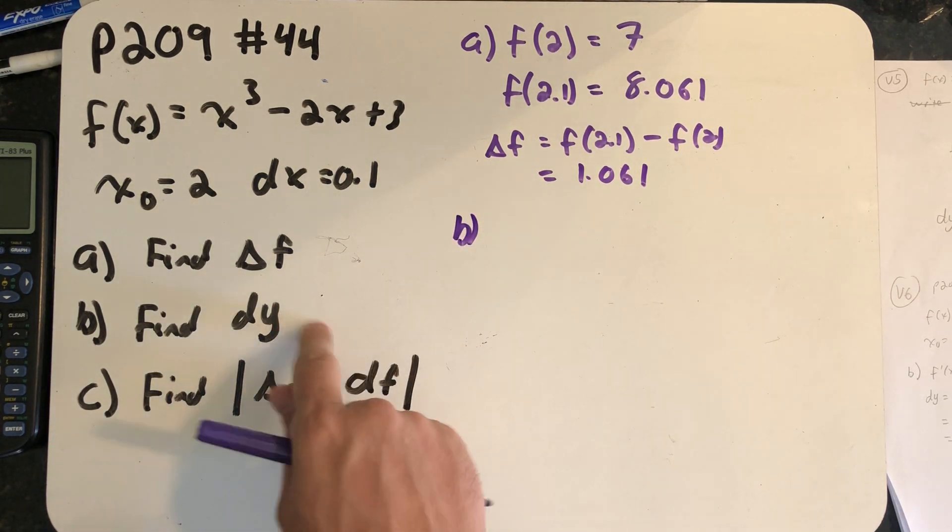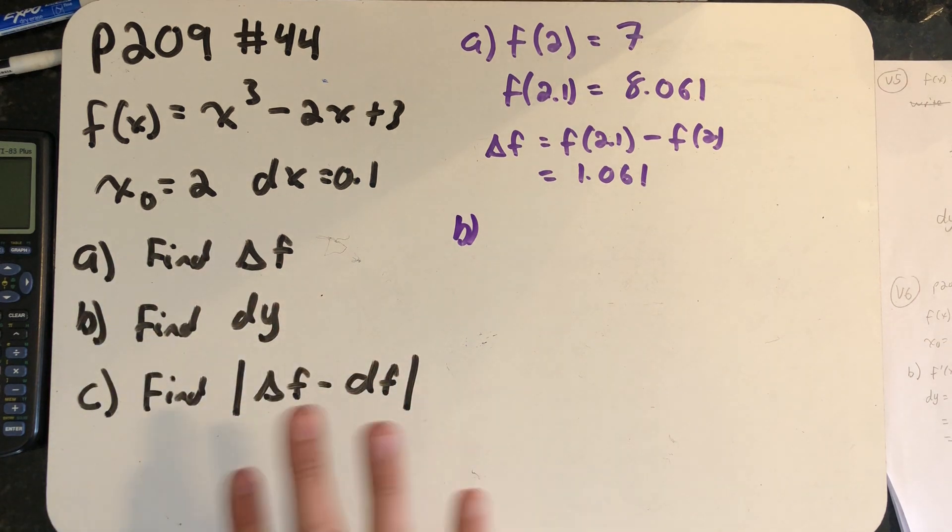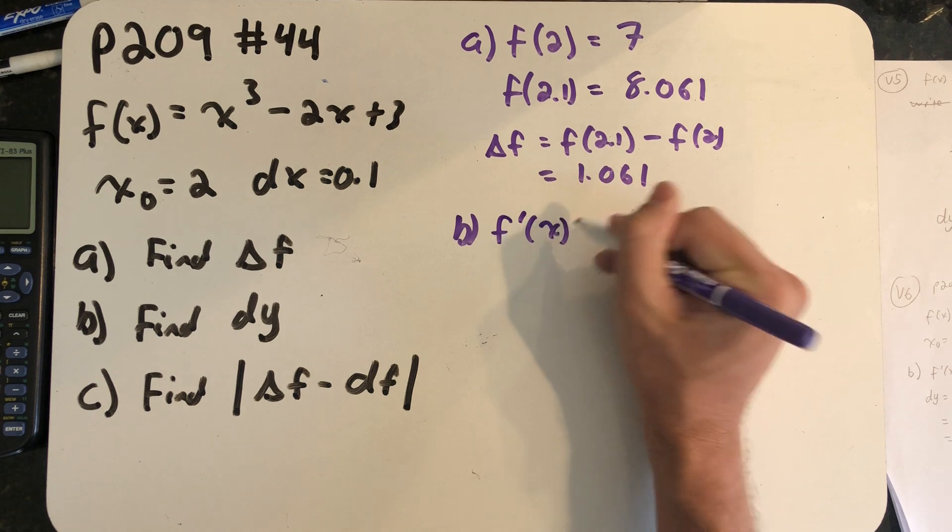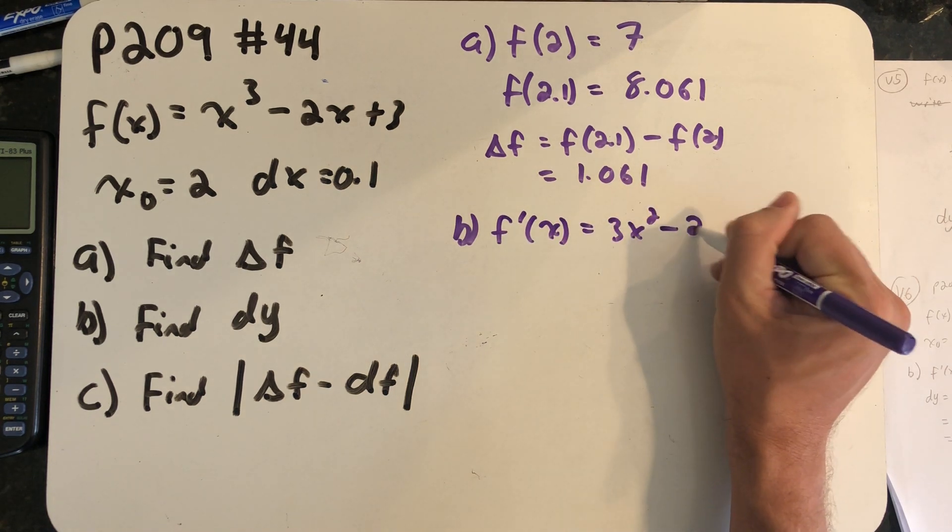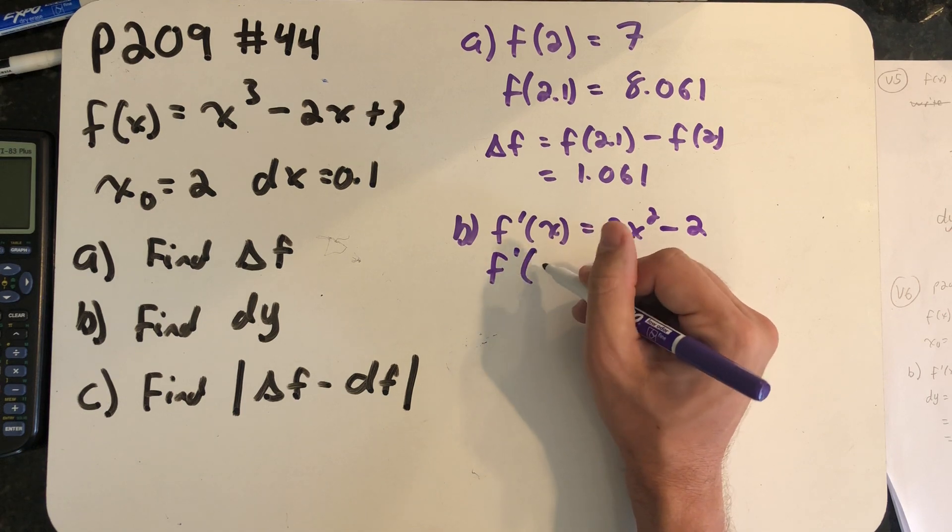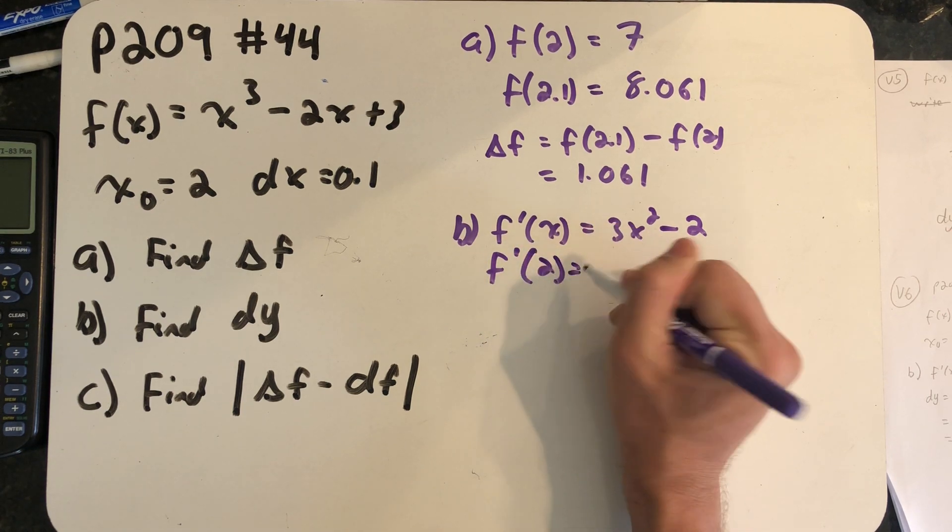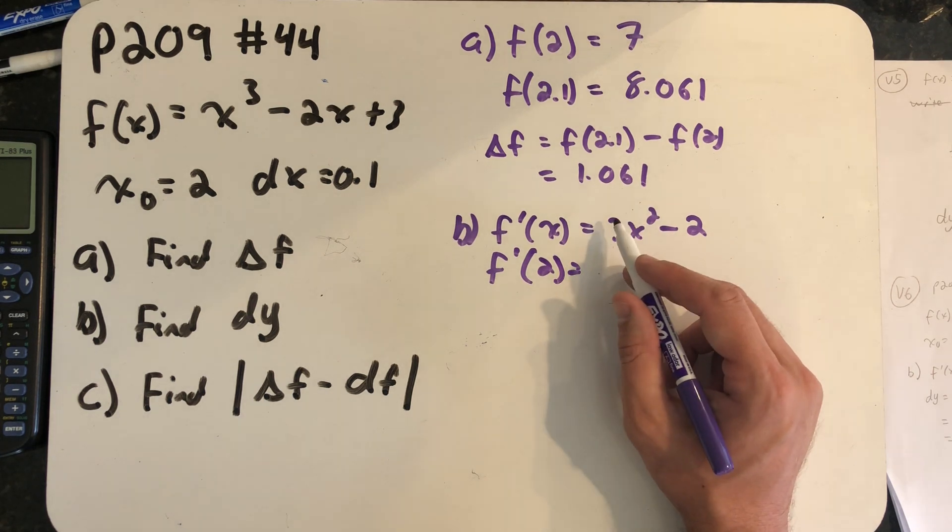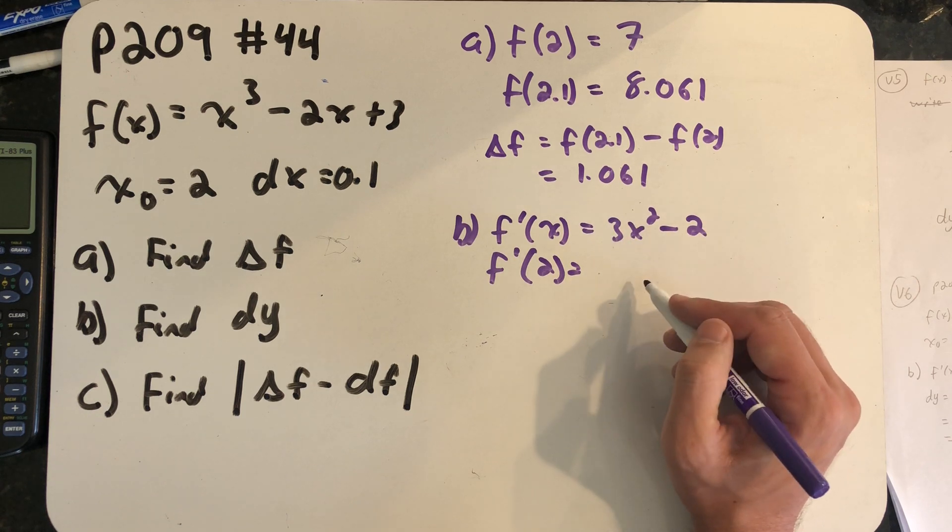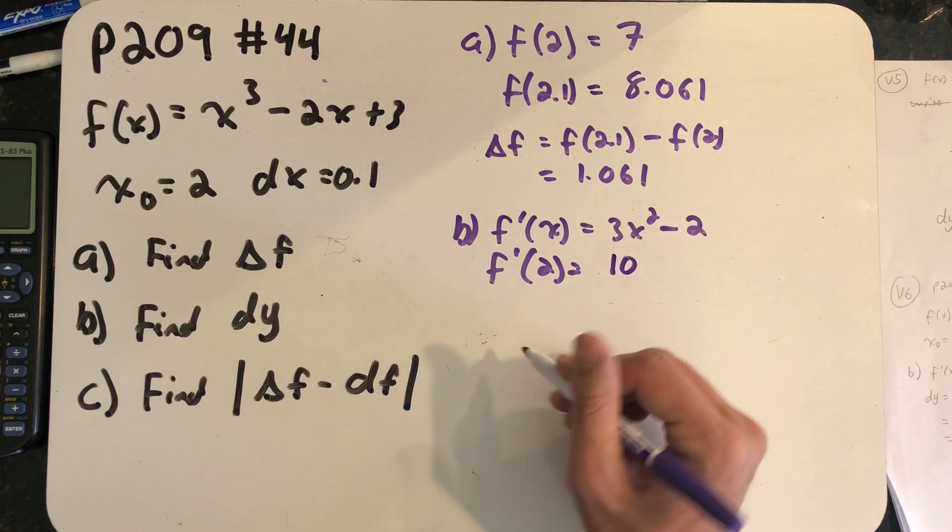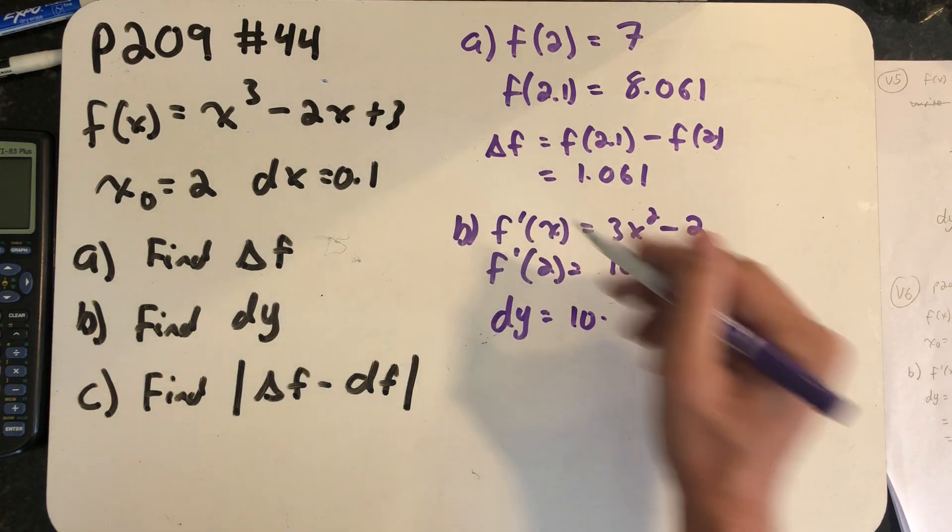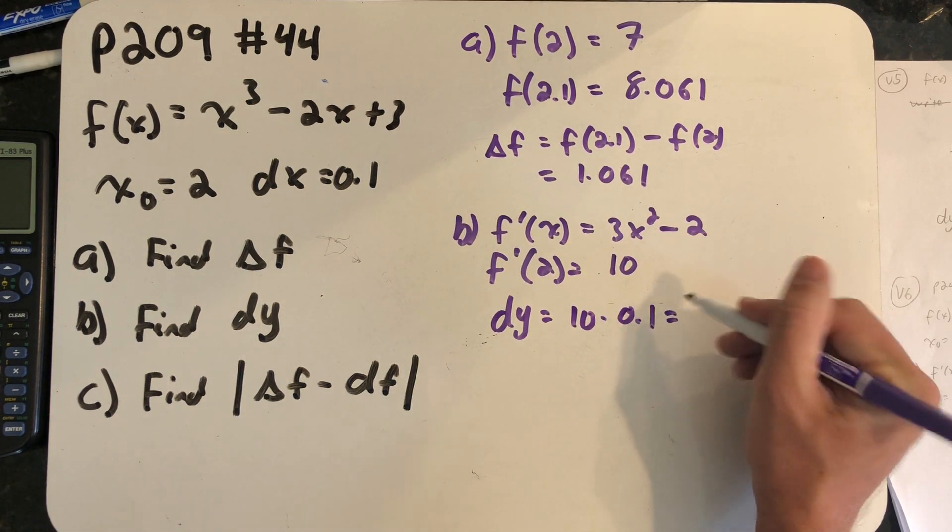In part b we're asked to find dy using these same values, so I need to take a derivative. I'll need to evaluate my derivative at x₀, so f'(2). Let's see, 2 squared is 4 times 3 is 12 minus 2 is 10. So dy at the point in question is simply 10 times dx, 0.1, which is 1.